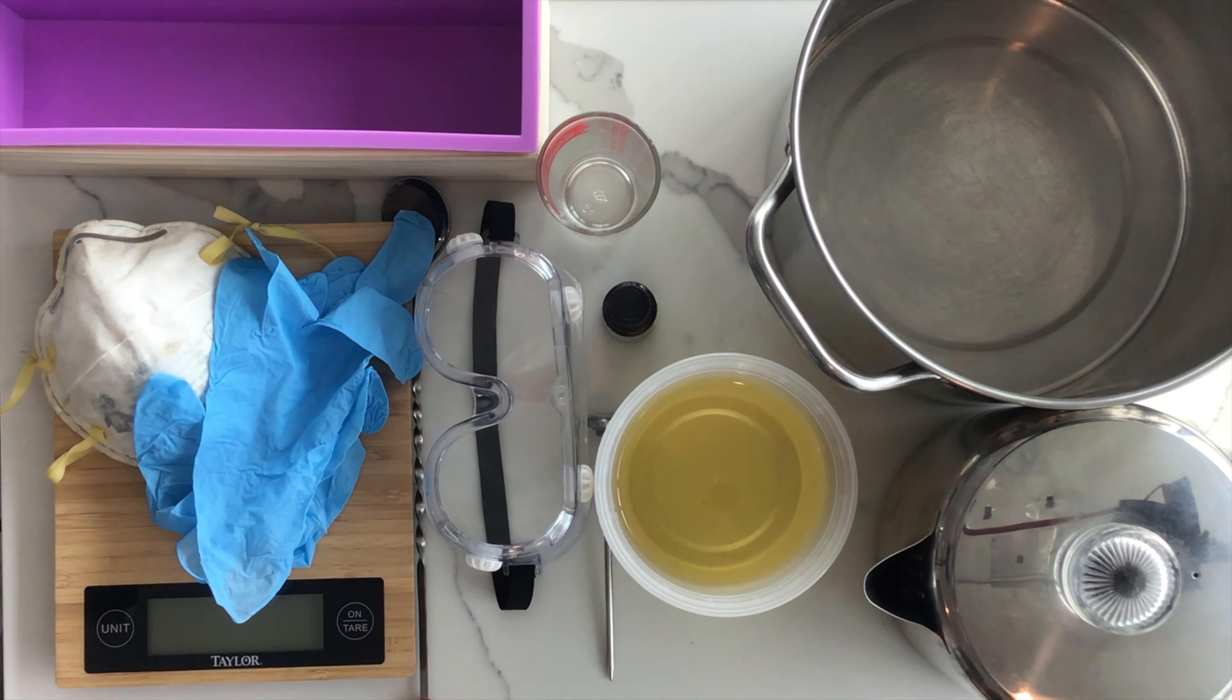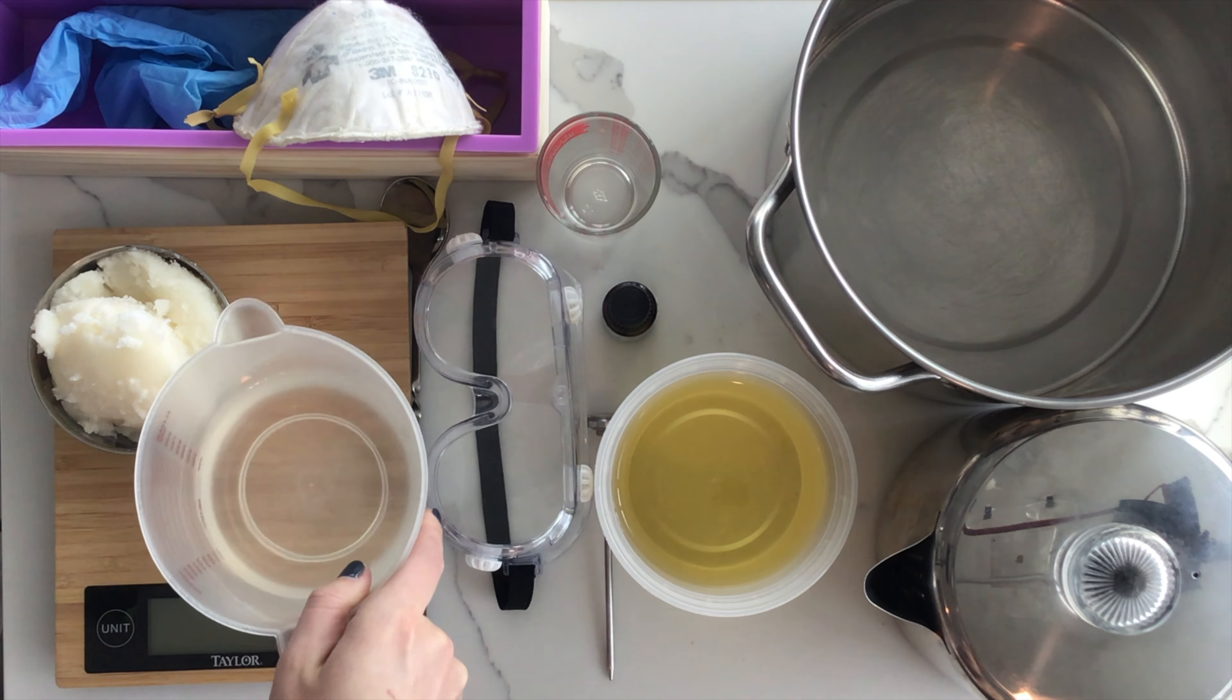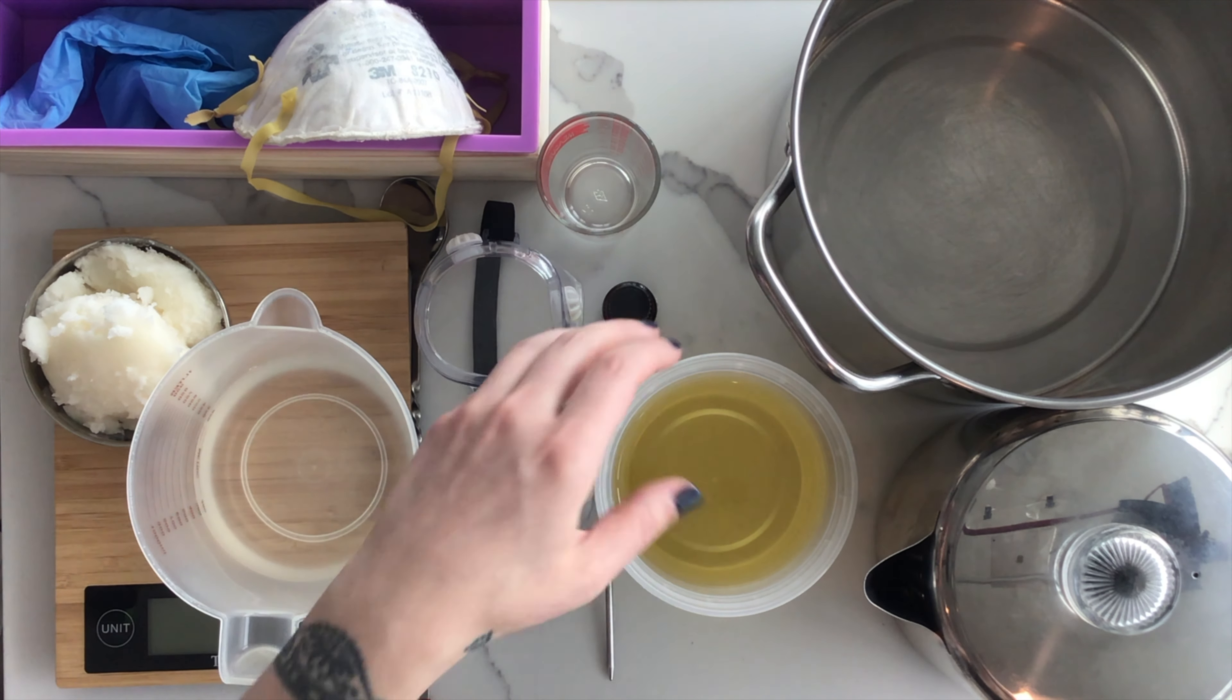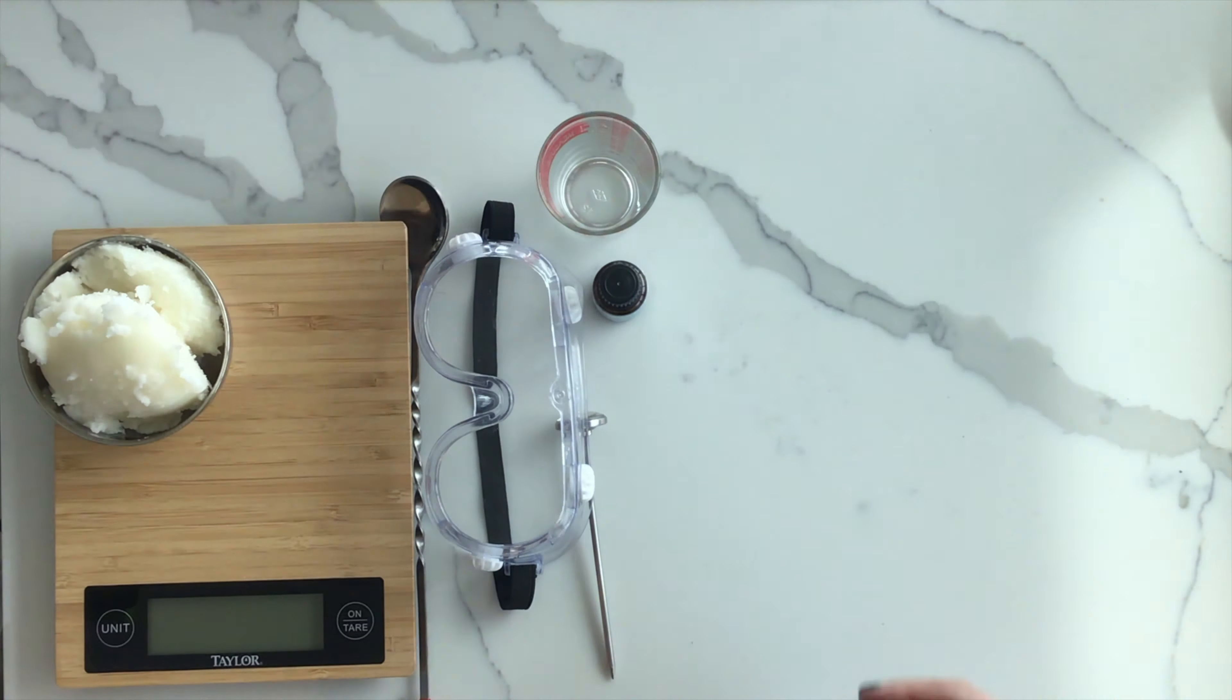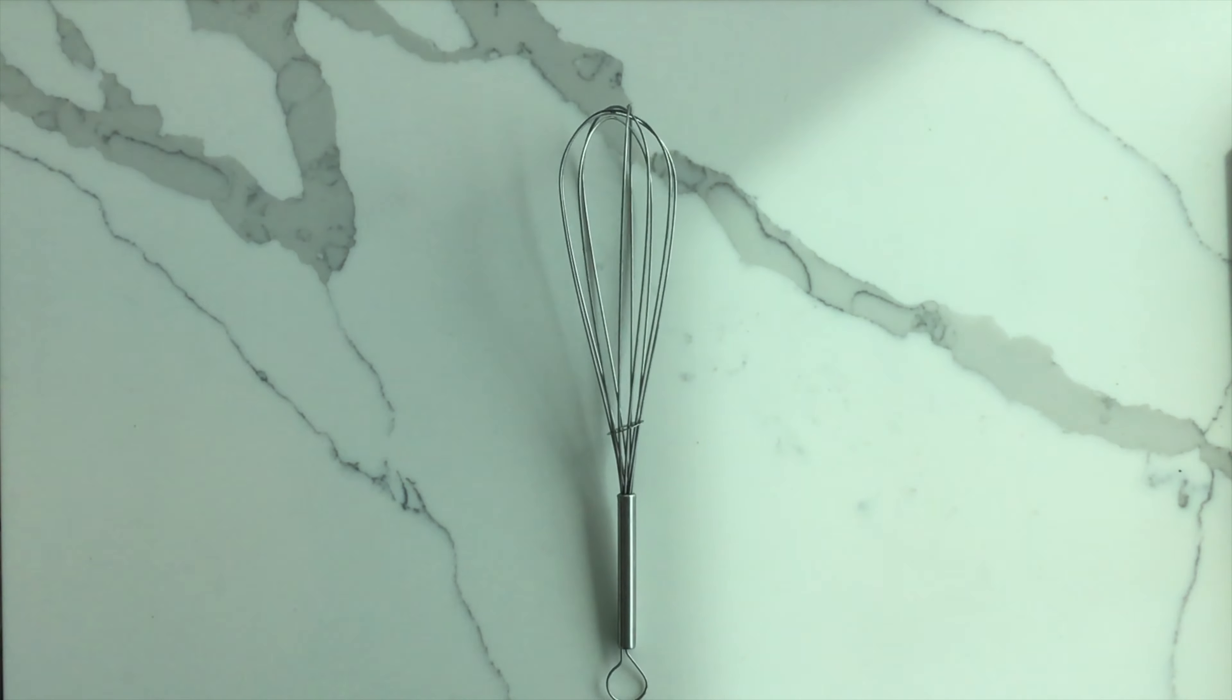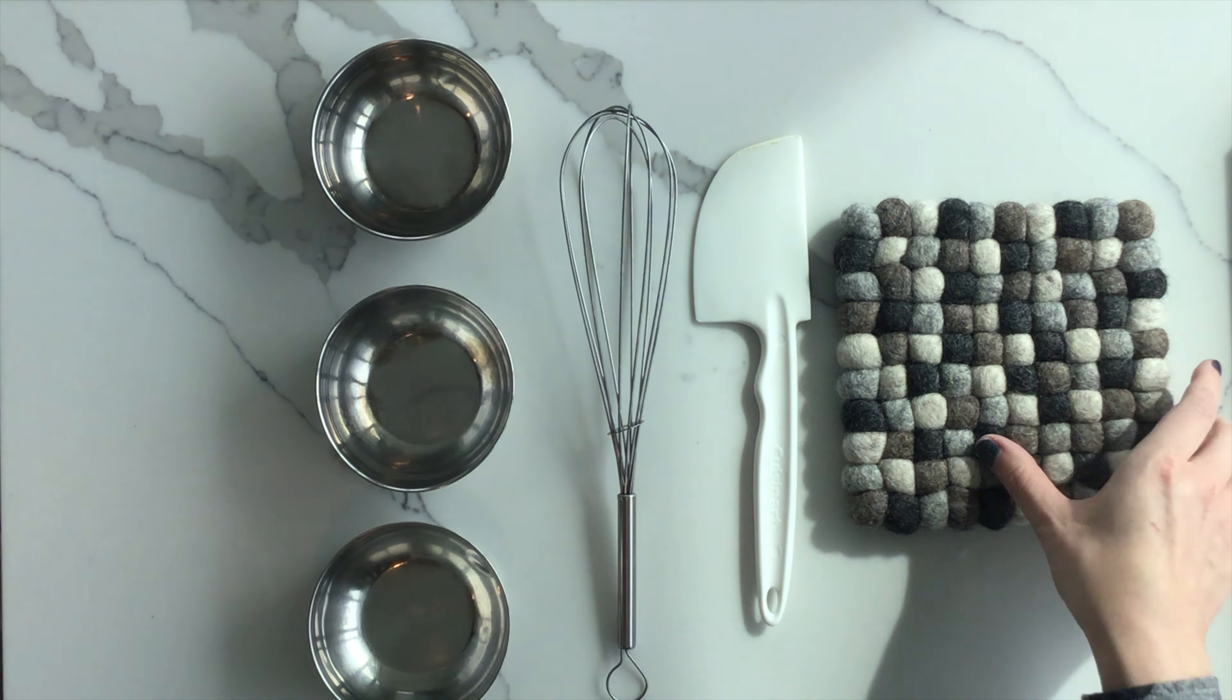Additional items include olive oil, coconut oil, filtered water, sodium hydroxide commonly called lye, a stainless steel whisk, a rubber scraper, extra ingredient bowls, and a potholder.